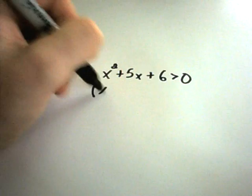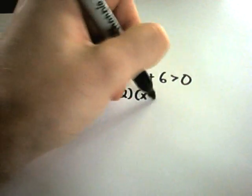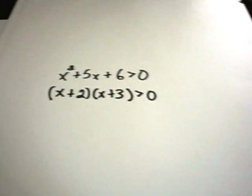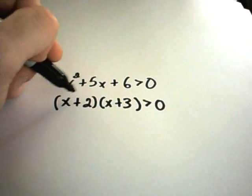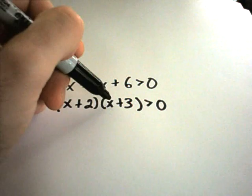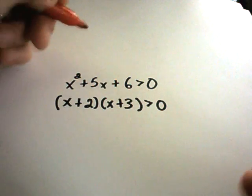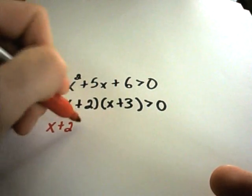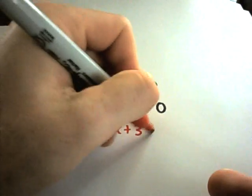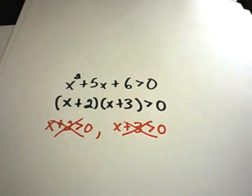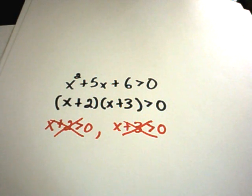Now, we're trying to solve the quadratic inequality x² + 5x + 6 > 0, or equivalently (x + 2)(x + 3) > 0. A lot of times people try to do the same thing for an inequality as for an equation — they'll say x + 2 > 0 and x + 3 > 0. That is absolutely not correct. Do not do that. Unfortunately it doesn't work out that easily, so we have to use a different approach.